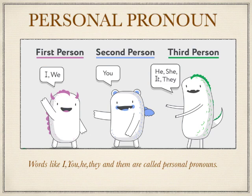Personal pronouns are divided into 1st, 2nd, and 3rd person. As you can see in the picture, the 1st person is the one who speaks — the 1st person refers to the speaker or speakers. For example, when we begin a sentence with I or we, the person speaking is called the 1st person. The 2nd person refers to the person or people spoken to — we use the word you.